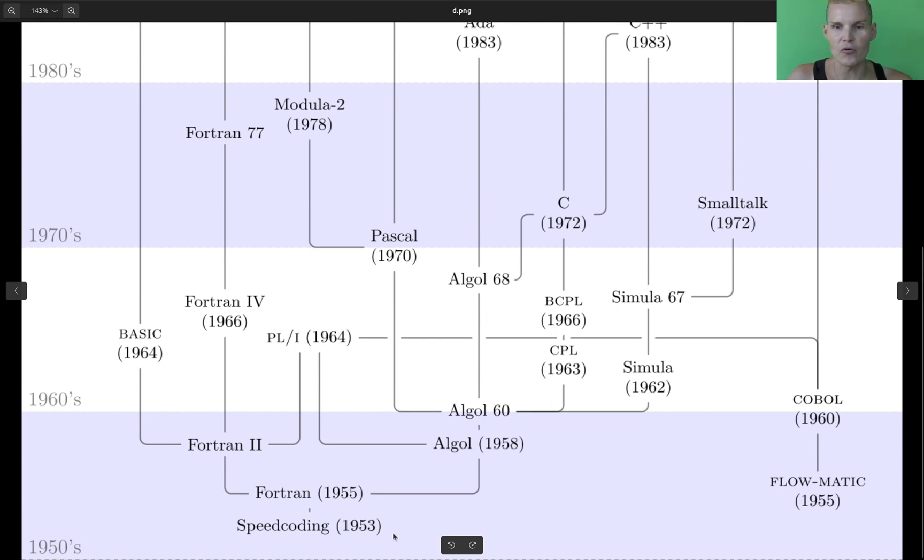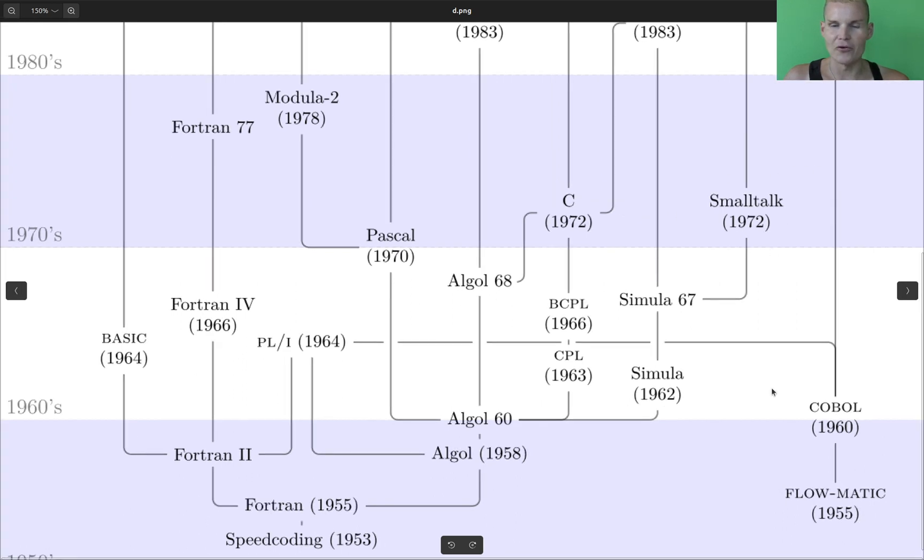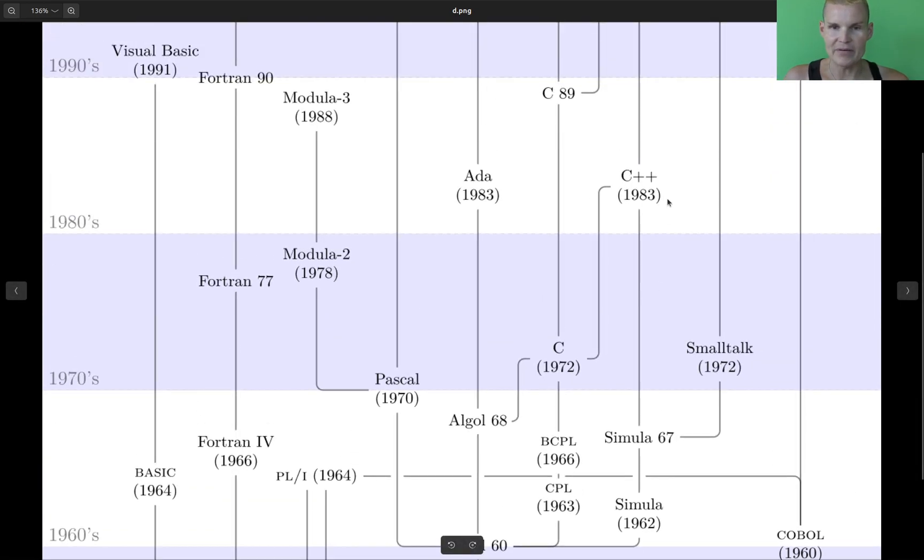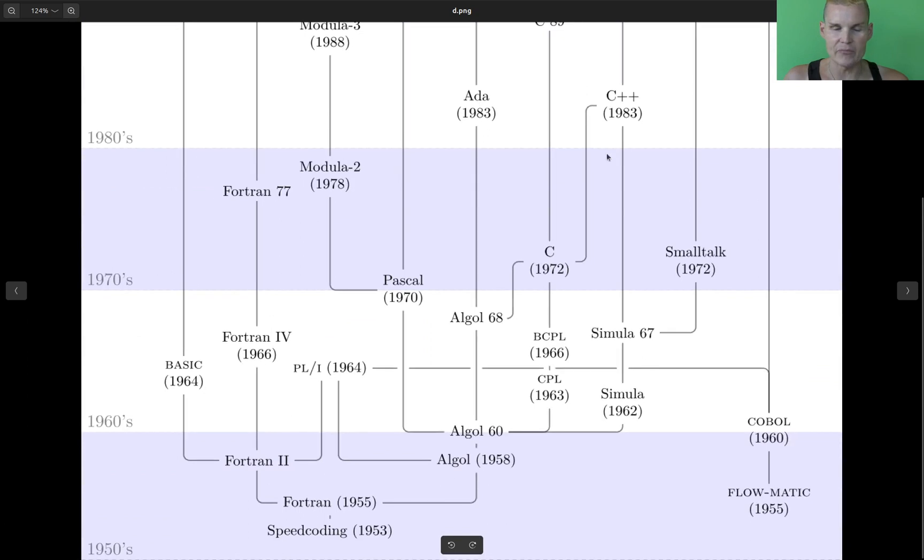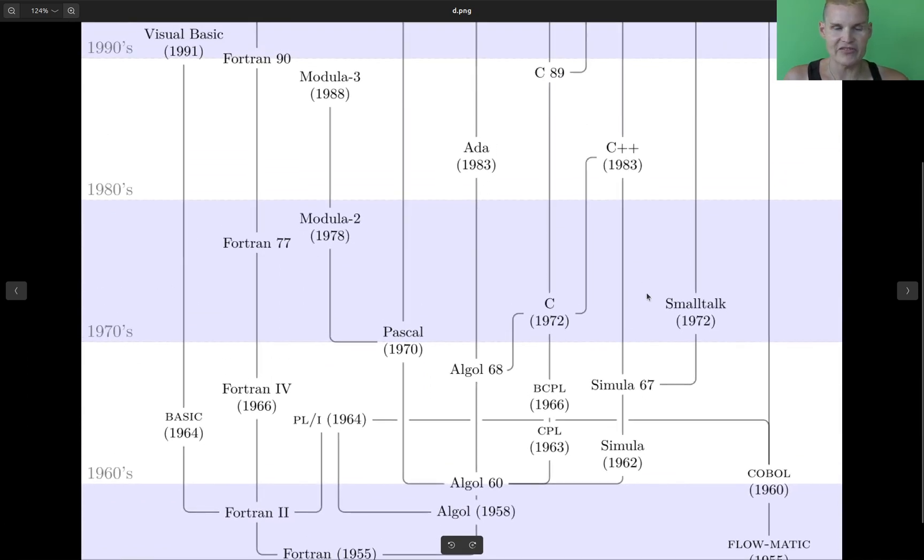So Fortran is one of the first ones. It was influenced by speed coding. And then a lot of nowadays well-known and even still used programming languages - Pascal, C, Smalltalk, C++, and whatever - they're all inspired in some way by Fortran. And I'm from that generation. I still learned BASIC, C, Pascal, Visual Basic and C++ in school. The good old days where you learn those languages in school. Hopefully nowadays they don't do that anymore because there's a shift to make programming more accessible by using better accessible languages.